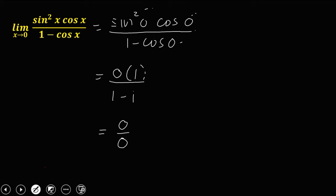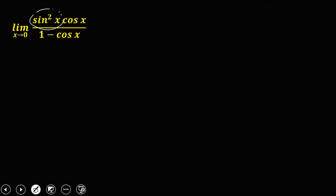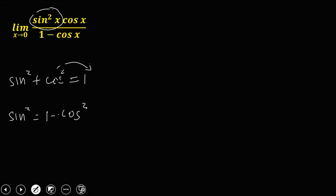We cannot apply direct substitution, so we need to reduce this equation first using trigonometric identities. Since we have sine squared x, we use the identity sine squared plus cosine squared equals 1, and solve for sine squared by transposing cosine squared. So sine squared x equals 1 minus cosine squared x, and we replace sine squared x with this expression.